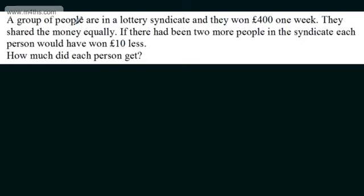A group of people in a lottery syndicate won £400 one week. They share the money equally. If there had been two more people in the syndicate, each person would have won £10 less. How much did each person get? You could use trial and error, but we're going to form a quadratic equation and solve it. Quadratic equations have a maximum of two real solutions — some have none, some have one (a repeated solution), and some have two.